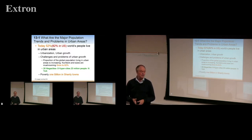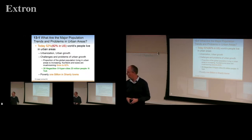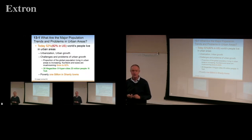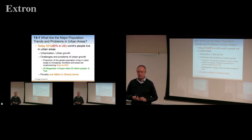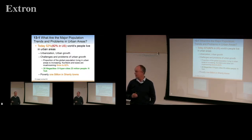We've already decided in this class that it's the social side of things that really drives change, so we need to focus on how we can help people be more sustainable and have a better quality of life. Today, 52% of the world's people live in urban areas, and that includes 82% in the U.S. This is combining all the third world countries where people tend to live outside of cities, but that's changing very fast.